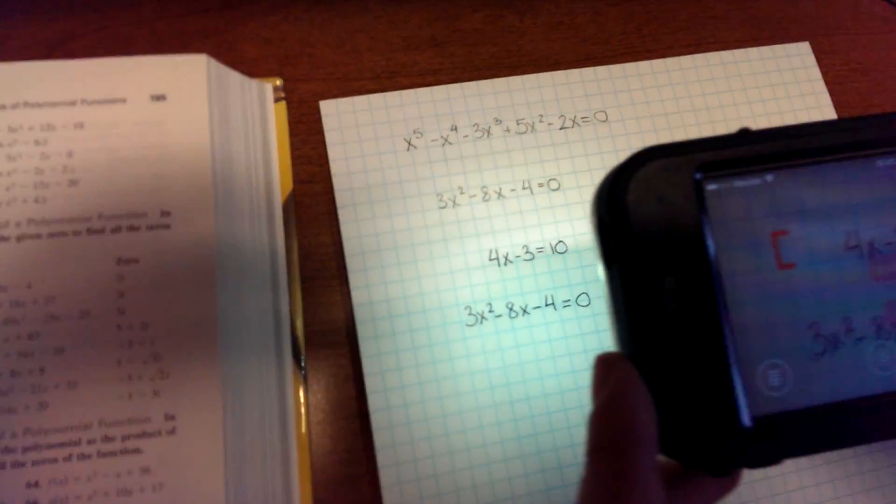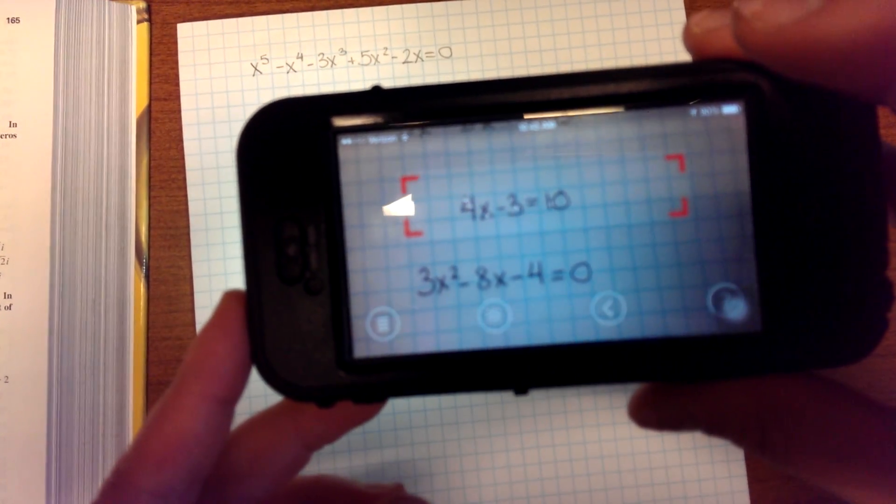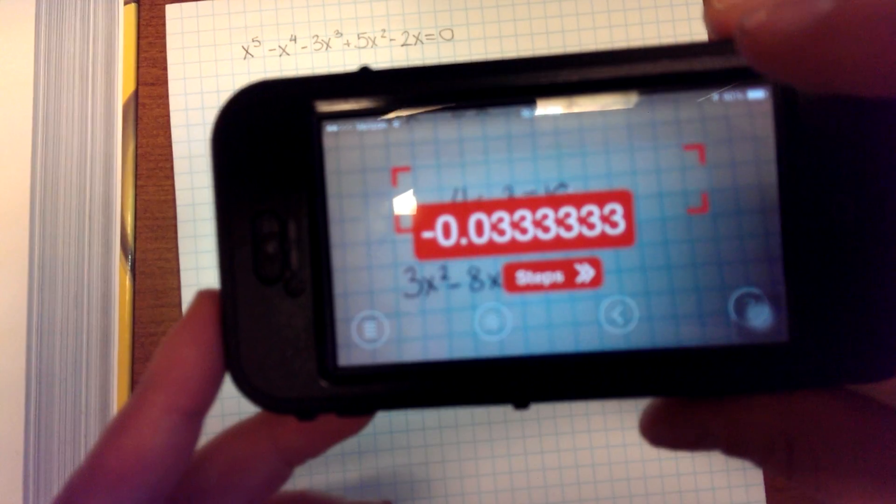So for this simple one here, 4x minus 3 equals 10. If you'll think about it, you get the right answer.